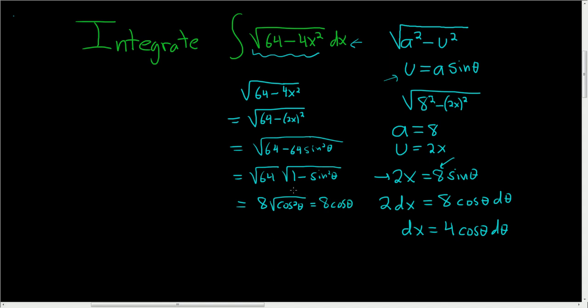I super rushed that, but it's okay. This is a long problem. So now, we'll make our substitution carefully. So we have this guy here. We said that was 8 cosine theta. And we said that dx is 4 cosine theta d theta.